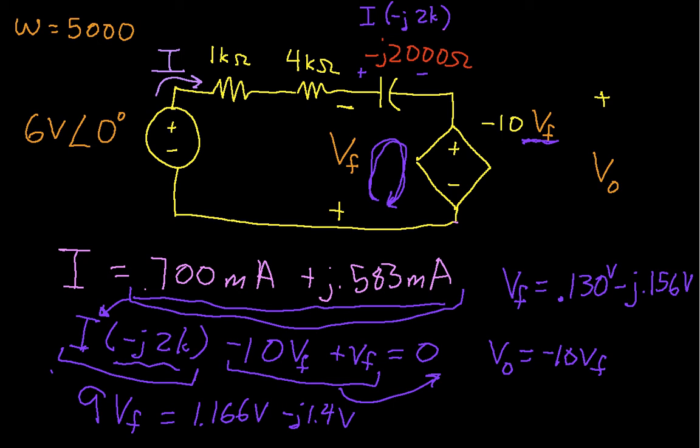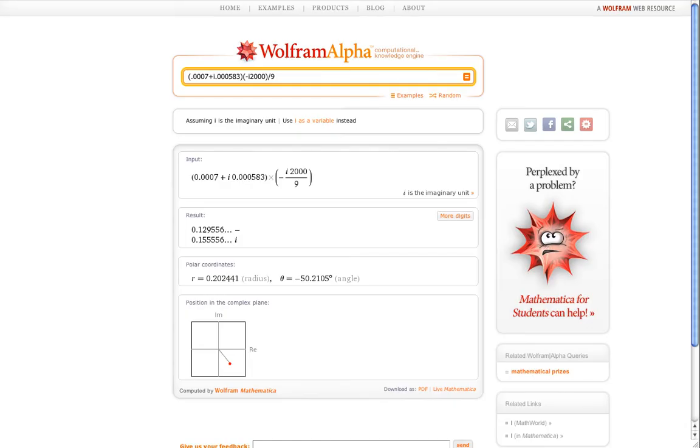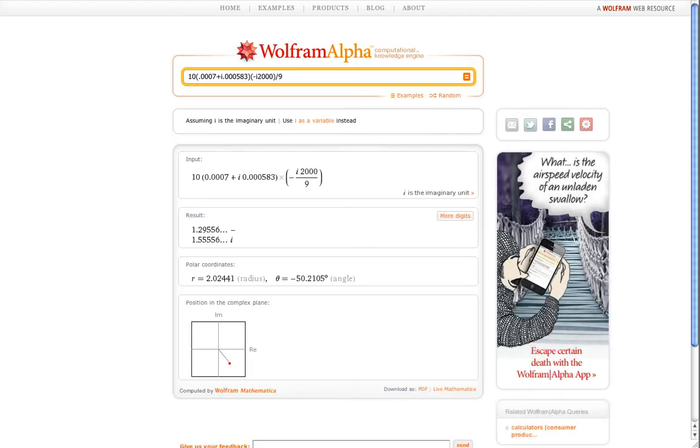Now this is a computation that's simple enough I could probably do it without resorting to alpha. But if I do resort to alpha, it's easier because I've been collecting my values here. And alpha will convert this from rectangular into polar coordinates.